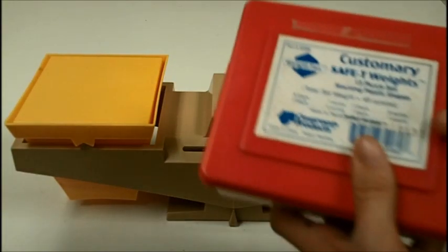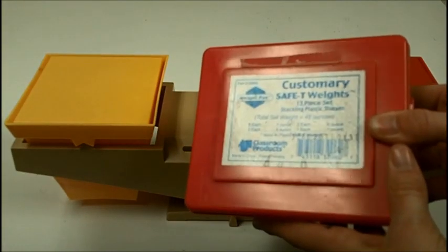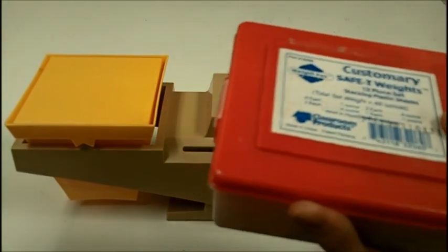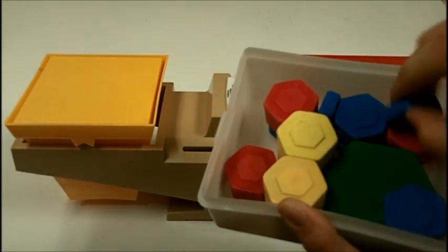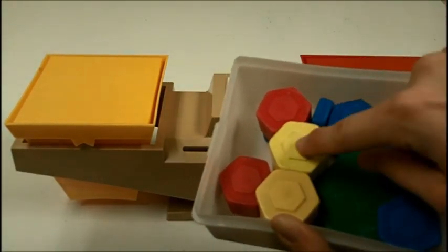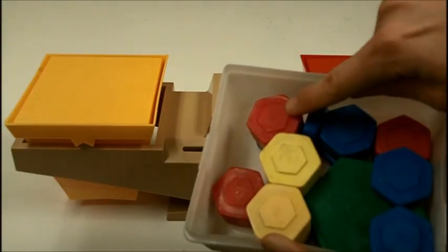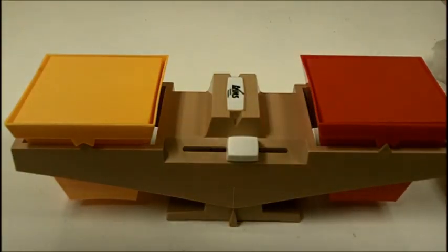We have two different kinds of weights in our class. We have the U.S. customary set, which has pounds, which is this big green one, and the ounces are blue. The eight ounces are yellow, and the four ounces are red. In our class,